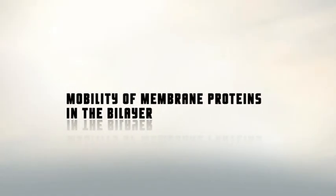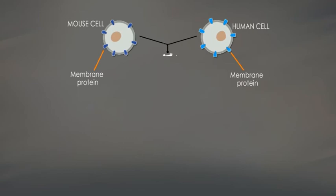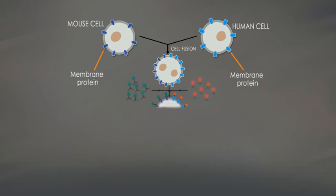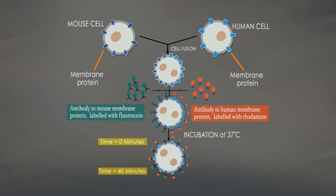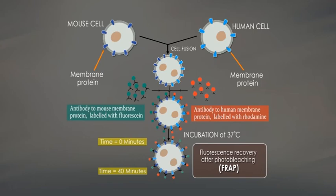Regarding the mobility of membrane proteins in the bilayer: like membrane lipids, membrane proteins do not flip-flop across the lipid bilayer, but they do rotate about an axis perpendicular to the plane of the bilayer — we call this rotational diffusion. In addition, many proteins are able to move laterally within the membrane, which is lateral diffusion. The first direct evidence that some plasma membrane proteins are mobile in the plane of the membrane was provided by an experiment in which mouse cells were fused with human cells to produce hybrid cells. Two differently labelled antibodies were used to distinguish mouse and human plasma membrane proteins. The two sets of proteins were found to have diffused and mixed over the entire hybrid cell surface within half an hour.